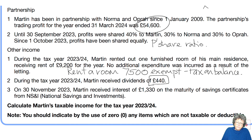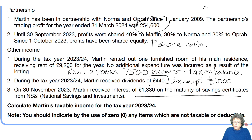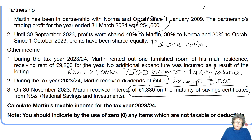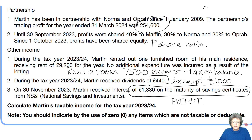Dividends of £440 — that will be exempt because of the first £1,000 dividend allowance. Bank interest on some savings certificates — those are exempt, as covered back in Chapter 2. So you are now to work out his taxable income for 2023/24.